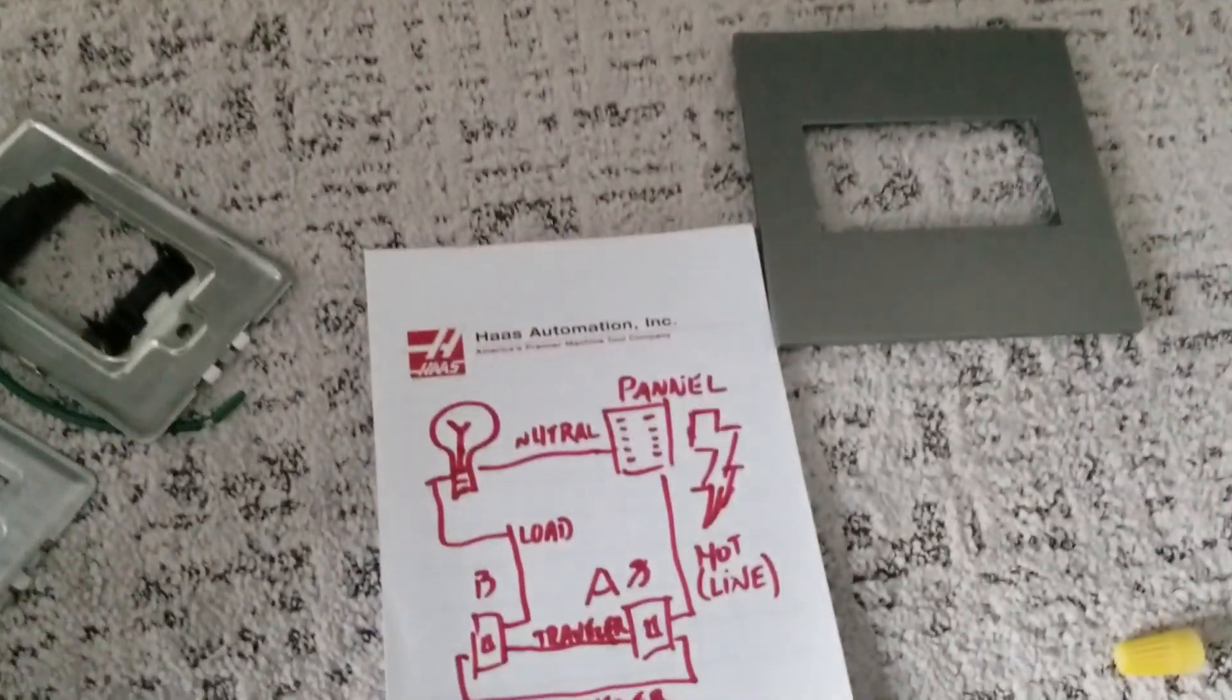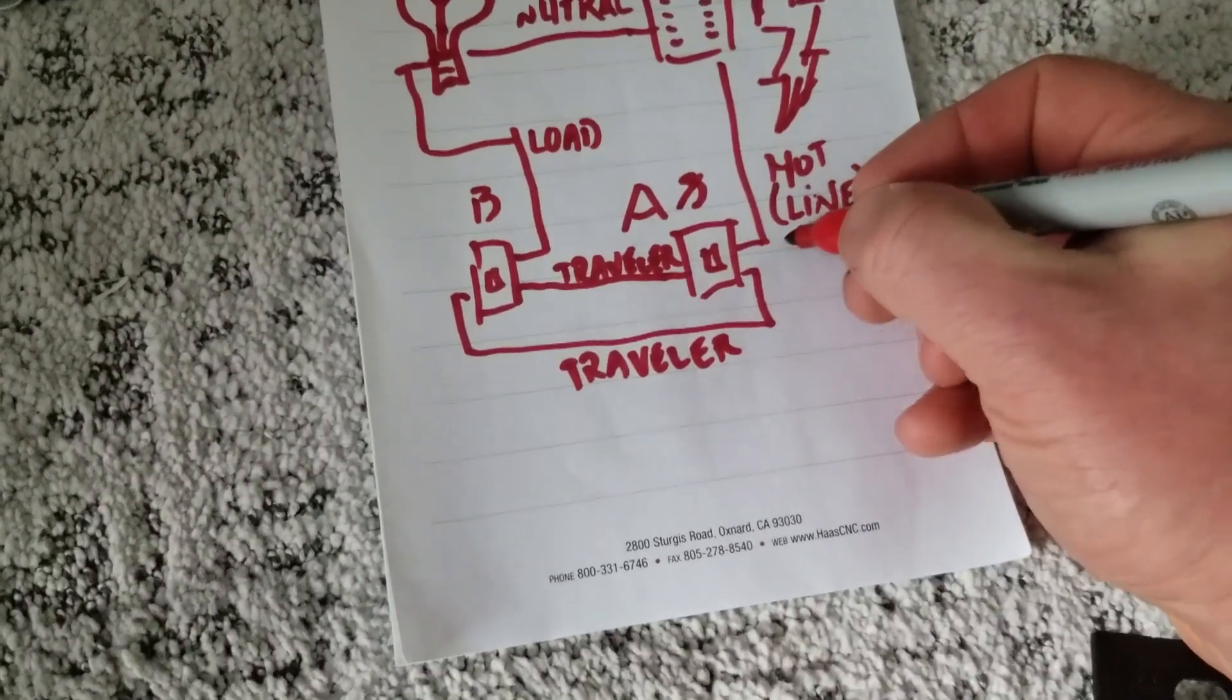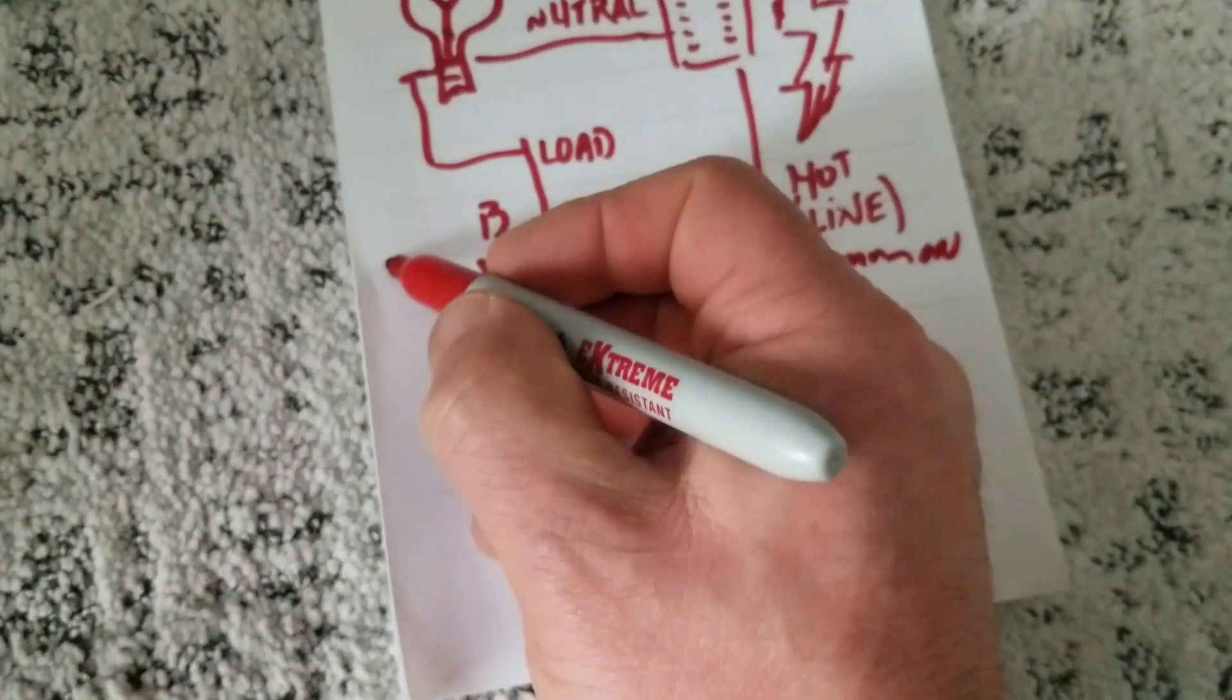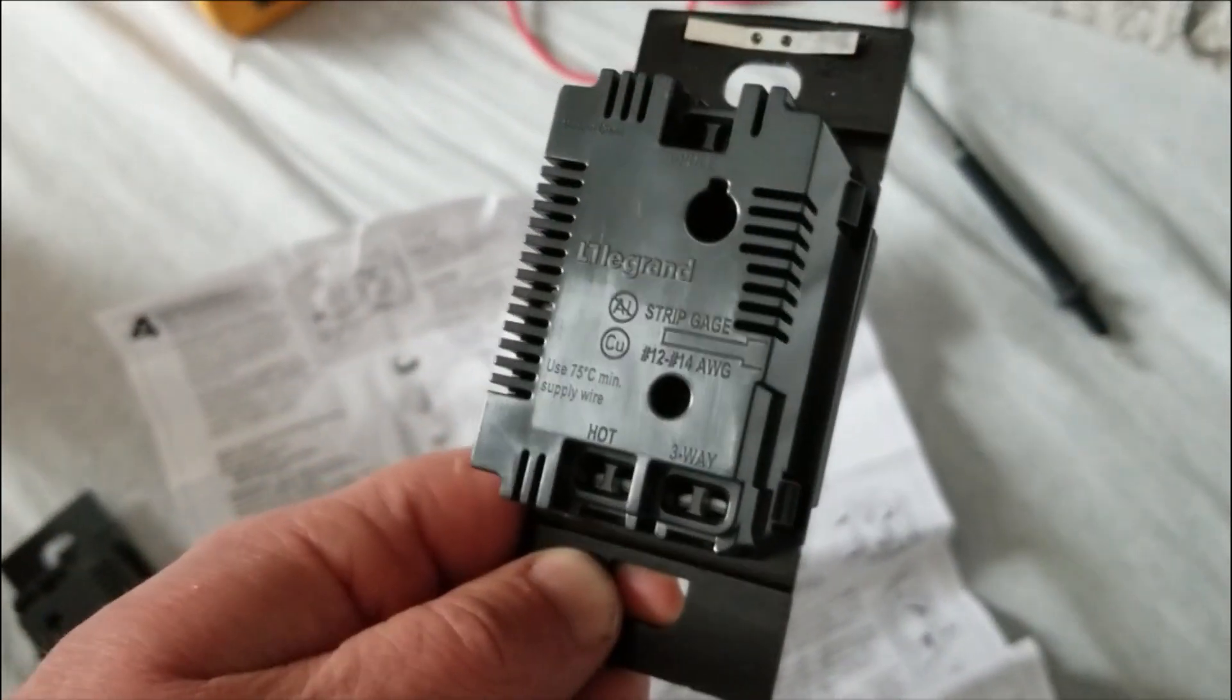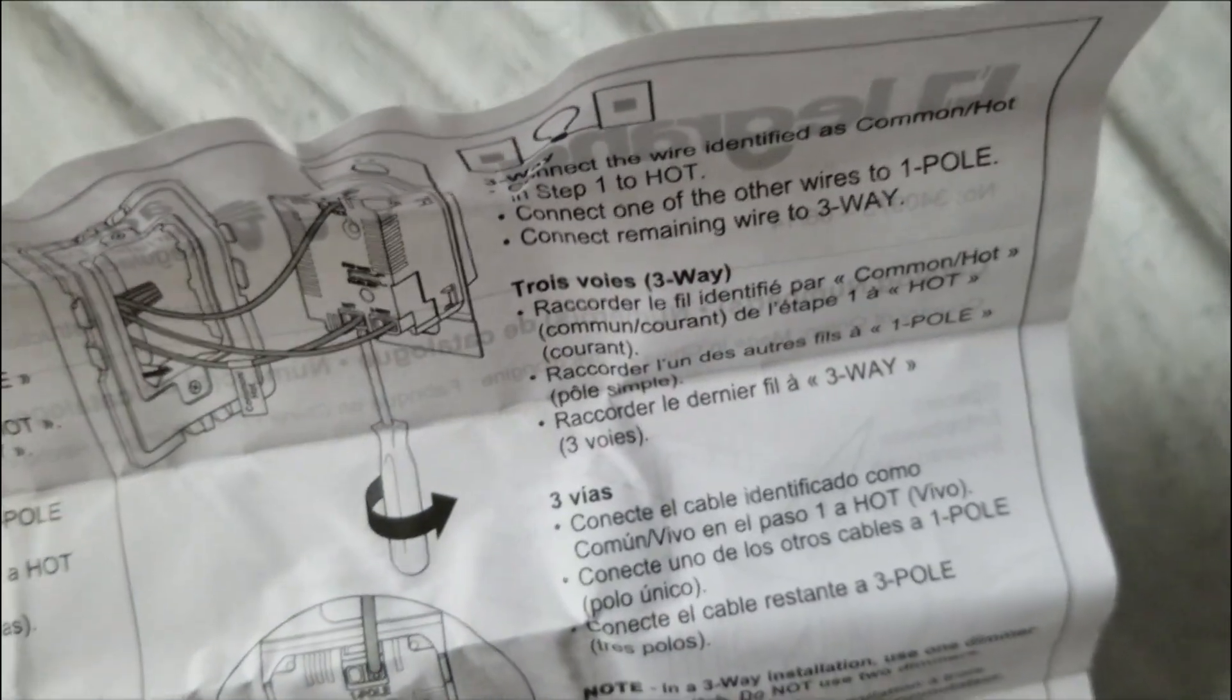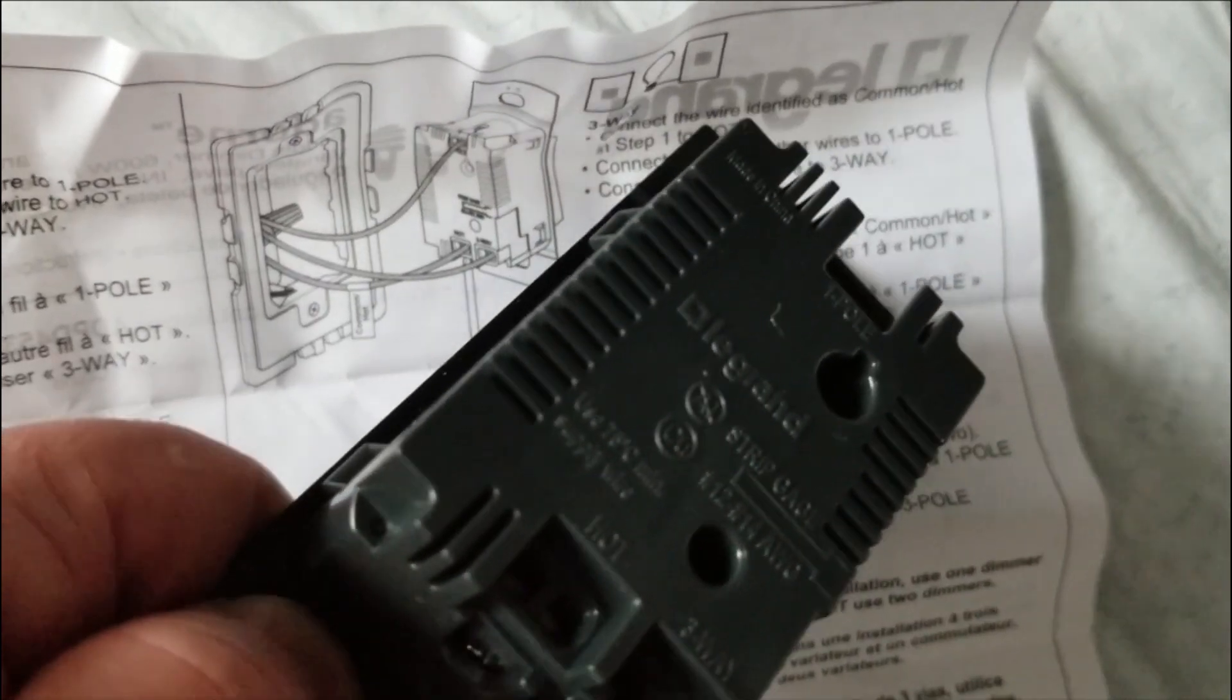Here's the trick. Now that we've identified the load and the line, they go into the common terminal of both A and B switches. These fancy uptown rigs, there is no terminal marked common. So we got to refer to our wiring buddy Emanuel - tells us three-way connected common to hot. There's the hot terminal.